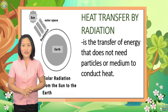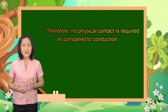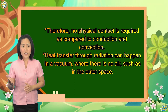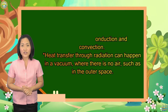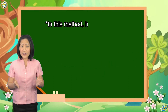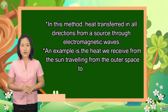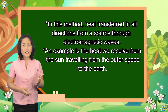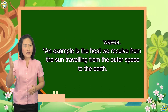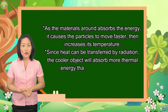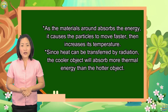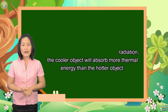Radiation is the transfer of energy that does not need particles or a medium to conduct heat. Therefore, no physical contact is required, as compared to conduction and convection. Heat transfer through radiation can happen in a vacuum where there is no air, such as in outer space. In this method, heat is transferred in all directions from the source through electromagnetic waves. An example is the heat we receive from the sun, traveling from outer space to the earth. As the materials around absorb the energy, it causes the particles to move faster, then increases their temperature. Since heat can be transferred by radiation, the cooler object will absorb more thermal energy than the hotter object.